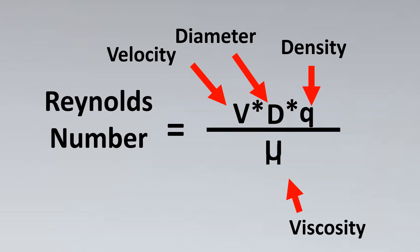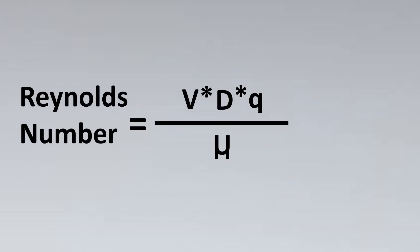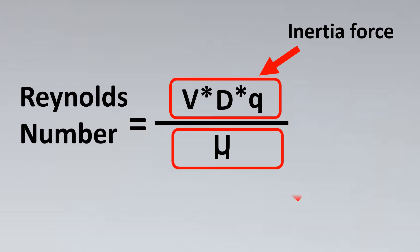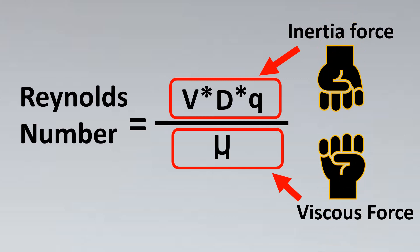Now this has a very interesting observation. The observation is that the numerator is basically the inertial forces that are acting on the fluid like the velocity, the diameter and the density. And if you look below, this is the viscous force or the viscous forces which are acting on the fluid. The numerator and denominator are actually having a fight with each other.